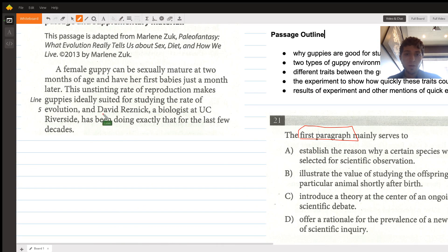Let's look at the first paragraph here. First paragraph says a female guppy can be sexually mature at two months of age and have her first babies just a month later. This unstinting rate of reproduction makes guppies ideally suited for studying the rate of evolution, and David Resnick, this biologist, has been doing exactly that for the last few decades.